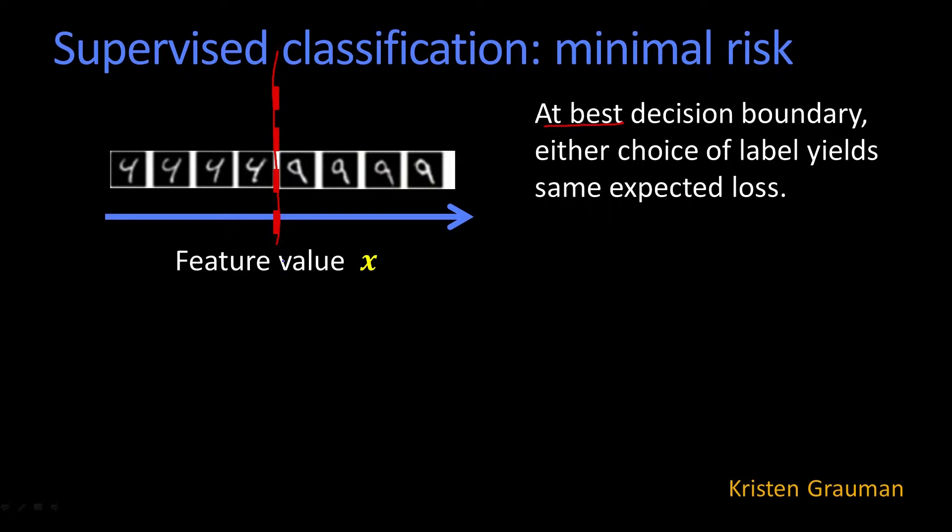Because in fact, if calling it a four would be less risk than calling a nine, I'm going to move that boundary this way. And if calling it a nine is better than calling it a four, I'm going to move the boundary that way.